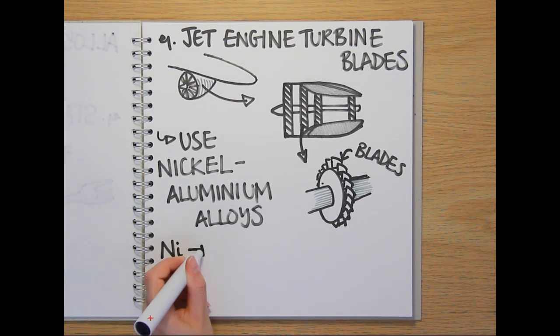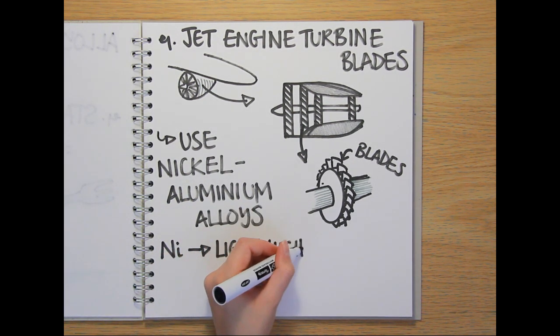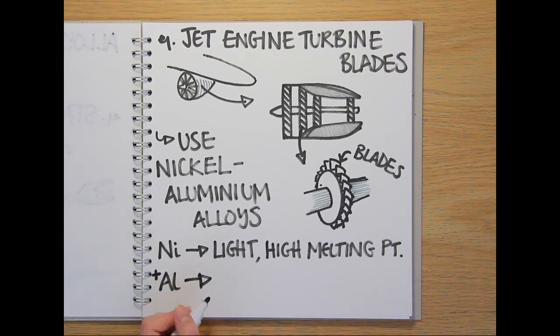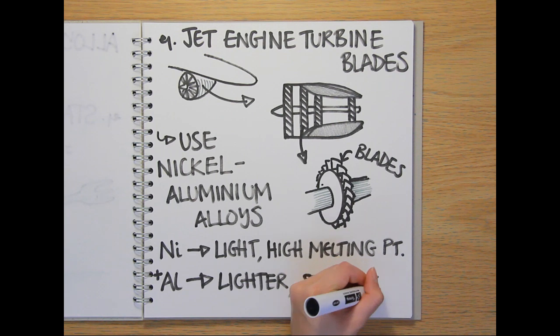because nickel is light and has a high melting point, meaning it can withstand the high temperatures inside the engine. The added aluminum also makes the alloy lighter and stronger.